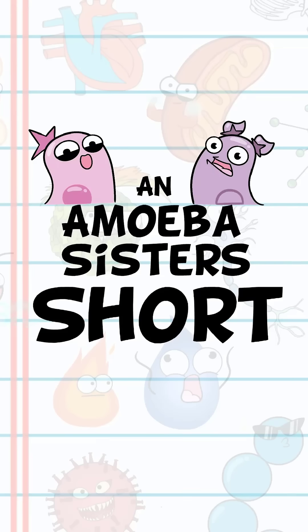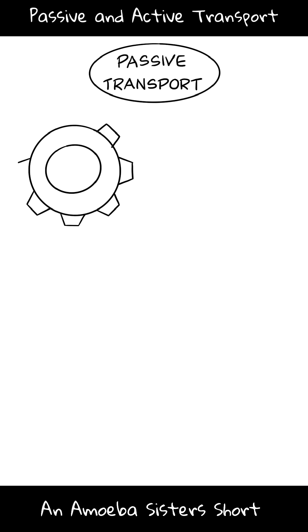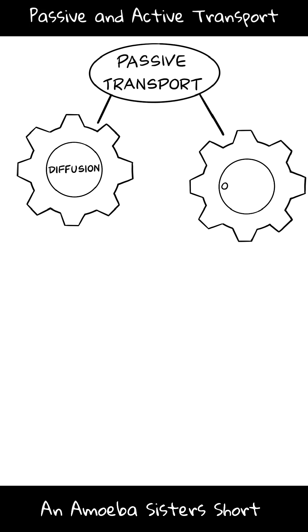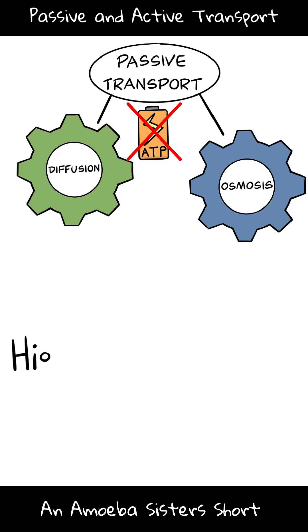Welcome to Amoeba Sisters short about passive and active transport. Passive transport includes diffusion and osmosis. It doesn't require added energy, so no ATP required.